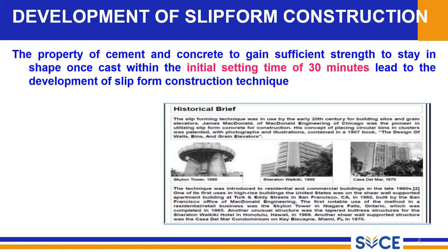The technique was first introduced to residential and commercial buildings in the late 1960s. One of the first uses in high-rise buildings in the United States was on the shear wall supported apartment. The properties of cement and concrete to gain sufficient strength to stay in shape once cast, with an initial setting time of 30 minutes, led to the development of the slip form construction technique.